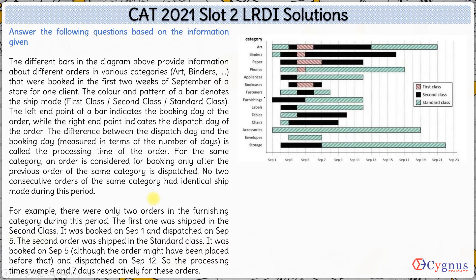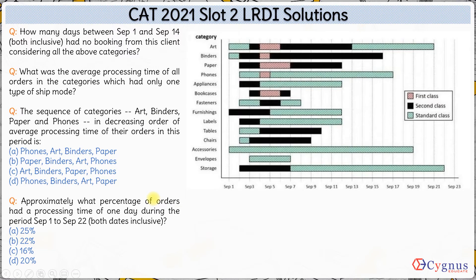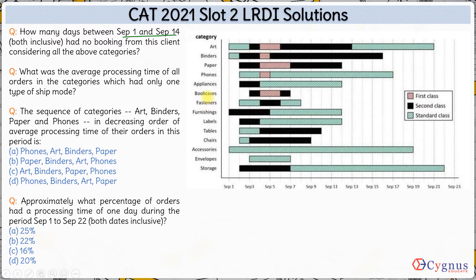Understanding the bar graph was the most important aspect of this set. Once we've understood it, let's look at the questions — they are very straightforward. The first question asks: for how many days between September 1 and September 14, both inclusive, had no booking from this client considering all categories?